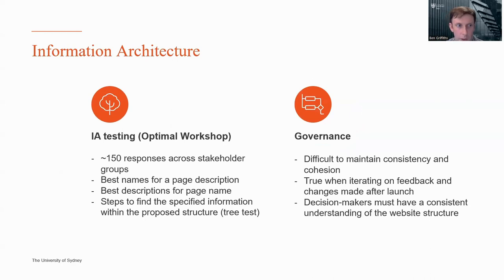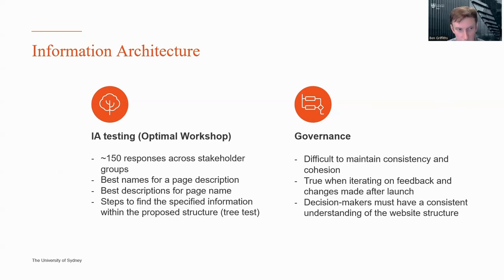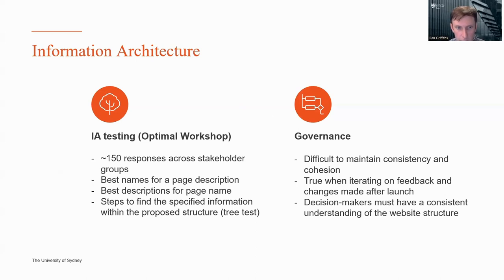Once we had our structure drafted, we did external IA testing using a tool called Optimal Workshop, getting about 150 responses across stakeholder groups — with the help of some coffee and meal vouchers. We asked participants to suggest good names for pages given a description, to predict what content would be on pages given a name, and to explore a collapsed tree view of our proposed structure to find where they'd expect to locate specific content. Again, very helpful insights that helped us refine the structure.